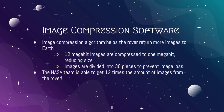Image compression software: this algorithm is developed at the Jet Propulsion Laboratory and allows the Perseverance Rover to return images to Earth. The software can take 12-megabit images and compress them to just 1 megabit, reducing their memory size. The algorithm can also divide the images into 30 pieces, reducing the possibility of losing an image. The NASA team is able to get 12 times the amount of images with this compression software.